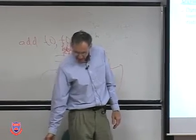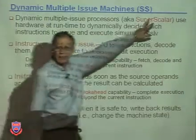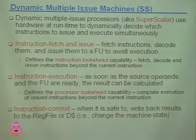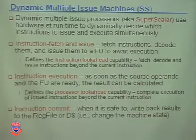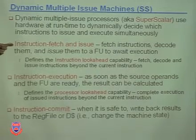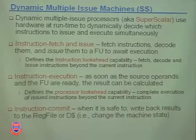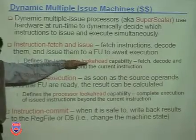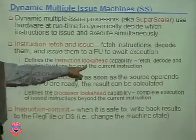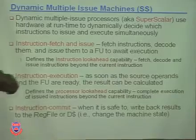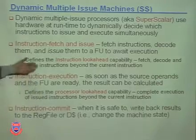We're now looking at dynamic multiple issue machines, and we're going to call them superscalar. That's their nickname - just as VLIW was the nickname for static, superscalar is the nickname for dynamic. We use hardware at runtime to figure out how many instructions to issue and which ones to run simultaneously. We fetch, decode, and issue instructions to a functional unit that is ready to execute them, requiring us to look ahead and have several instructions ready. The idea is pre-fetching or fetching ahead.